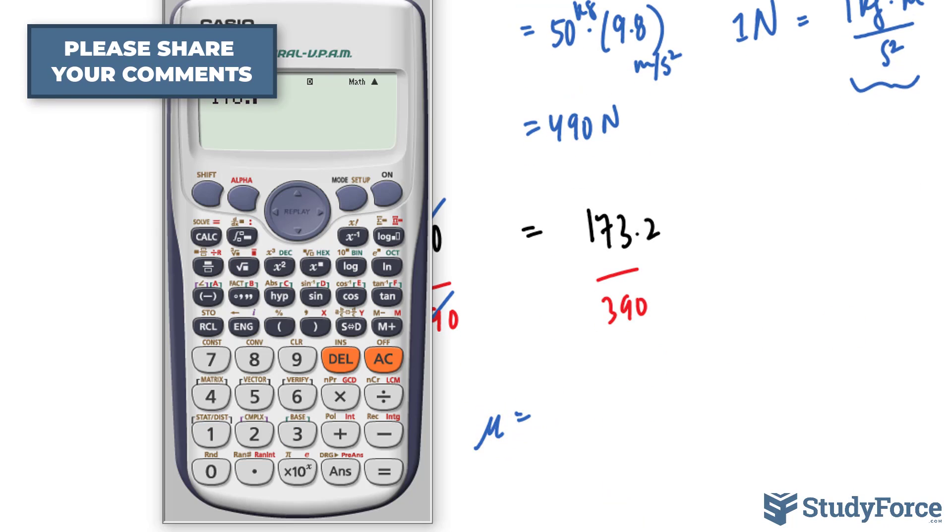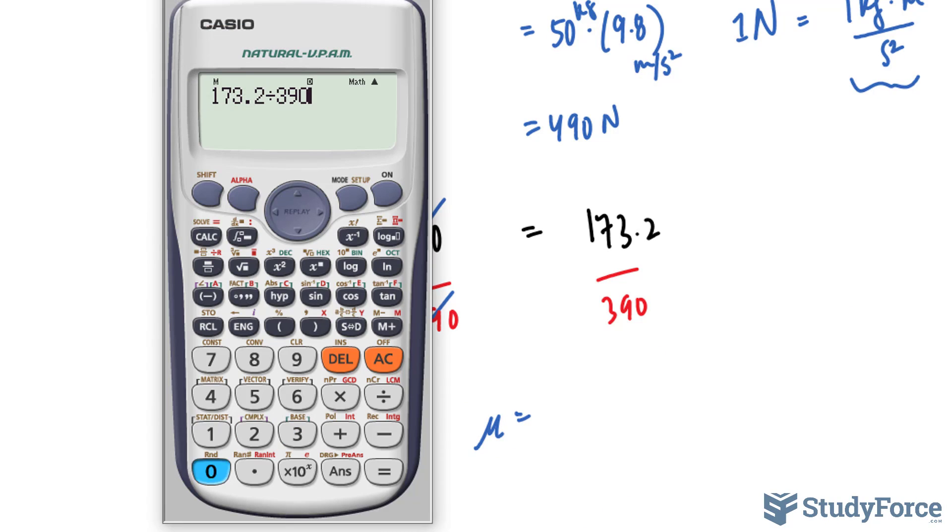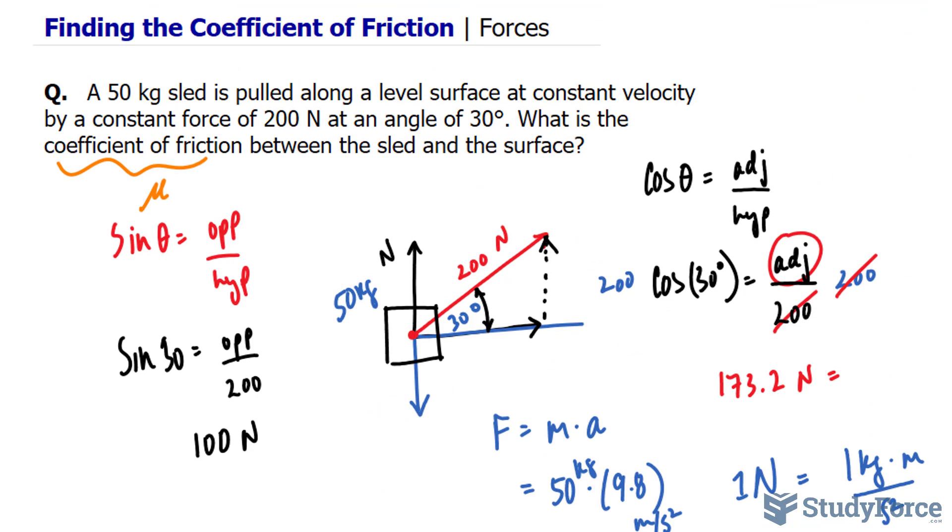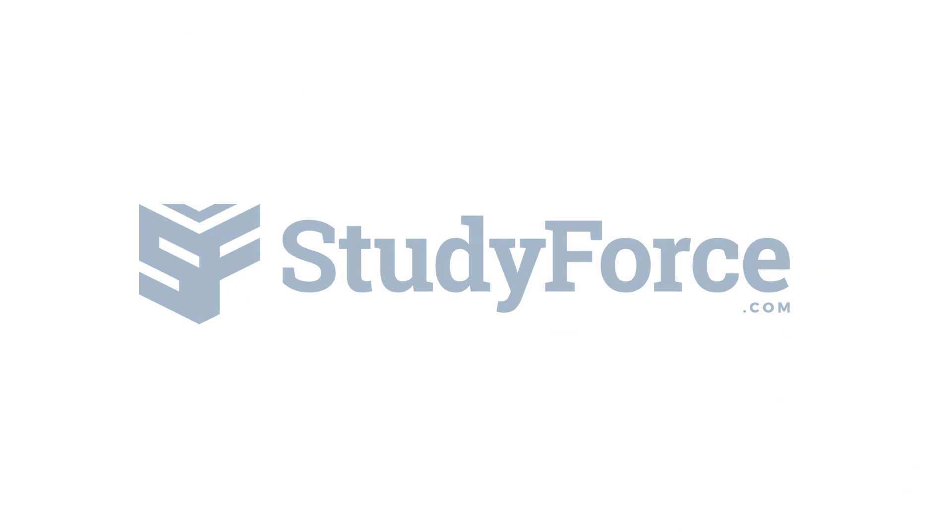So 173.2 divided by 390 gives us a coefficient of friction of 0.44. And this doesn't have any units, so just leave it as 0.44. And there you have it. That is how to find the coefficient of friction in a generic force problem.